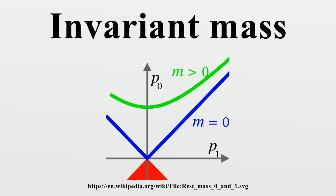If objects within a system are in relative motion, then the invariant mass of the whole system will differ from the sum of the objects' rest masses. This is also equal to the total energy of the system divided by C². Since the mass of systems must be measured with a weight or mass scale in a center of momentum frame in which the entire system has zero momentum, such a scale always measures the system's invariant mass.